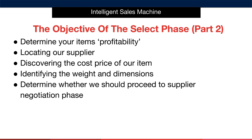We'll initially locate your supplier, vet them, and move forward with confidence. We're going to figure out profitability by discovering the cost price of our item with the supplier, as well as identifying the weight and product dimensions — how tall and how long our product is. This allows us to calculate exact profitability based on the sales price found in the previous module, then input it all into the Google sheet to determine whether it's worth taking to the supplier negotiation phase.